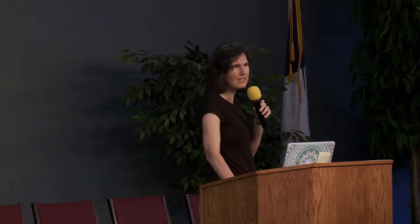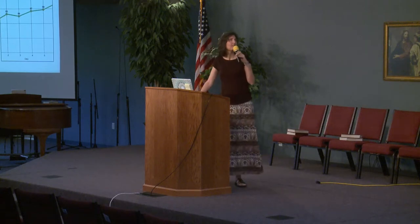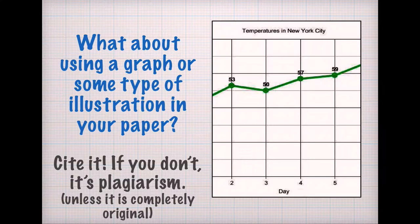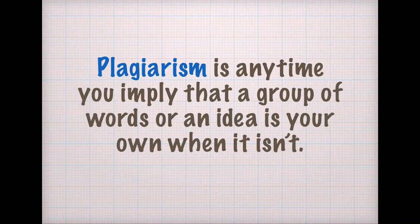What if in a paper you use a graph or some type of illustration? Do you need to cite that and say where it came from? It's not words, and plagiarism is copying someone's words — so can you just use it? No, you have to cite it. If you don't, it's plagiarism; you have to say where that graph came from, unless you made it yourself, in which case it's original. Plagiarism is anytime you imply that a group of words or an idea is your own when it isn't.